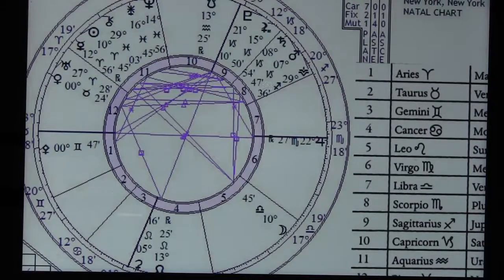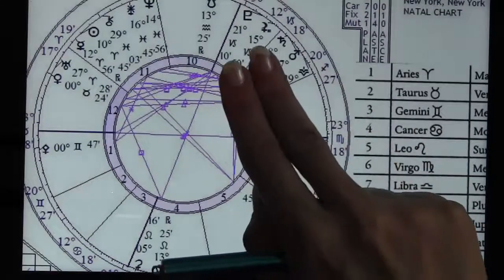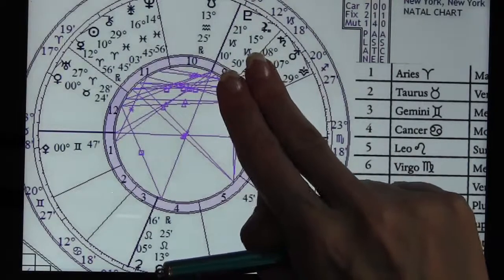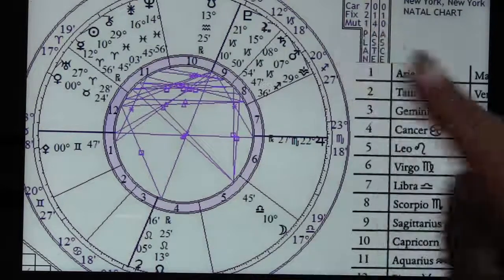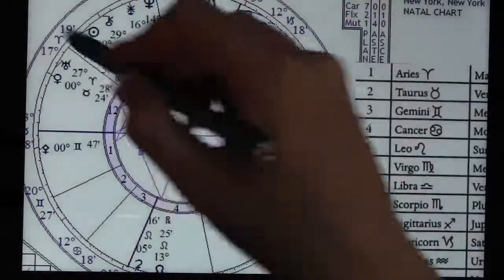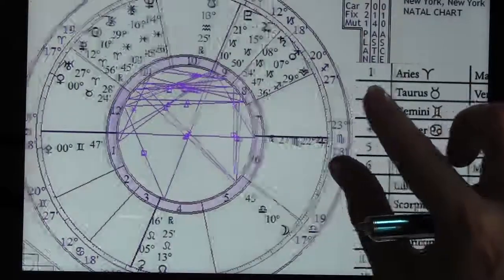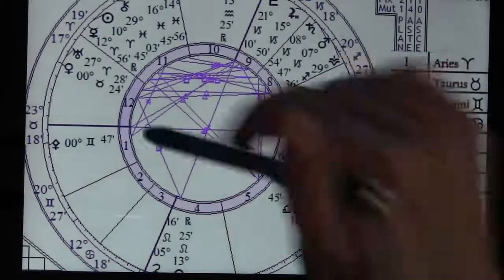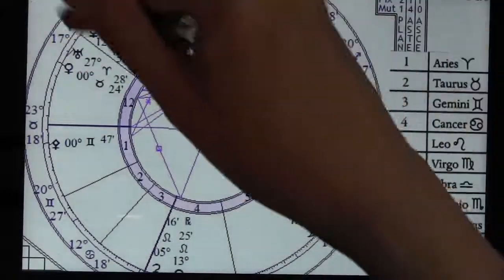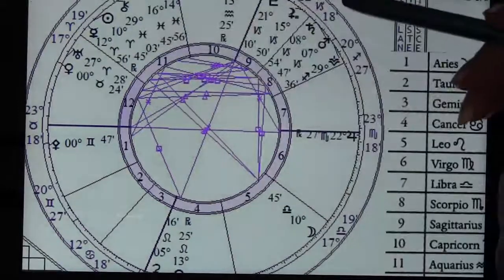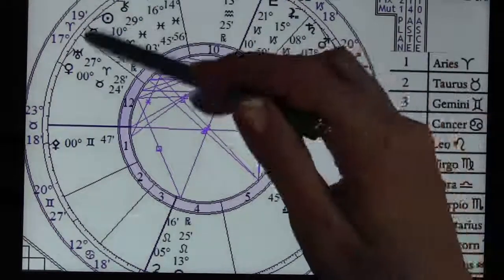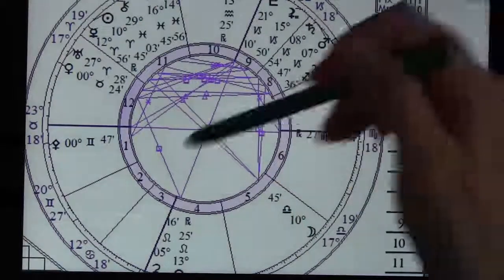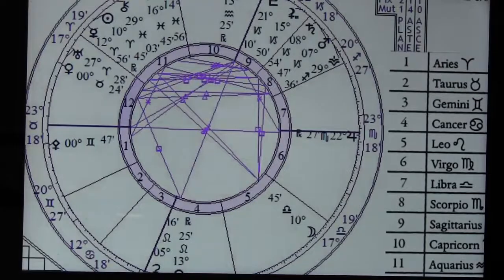Saturn and Mars working together as a team is formidable - they could move mountains. We've got the Sun, the Moon, because it's a full Moon, Mercury's in there too with the Sun, and it's squaring off with this Saturn-Mars conjunction.